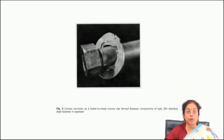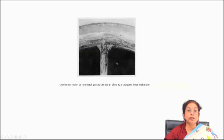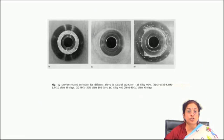You have to design component combinations properly to combat the possibility of crevice attack. This is an example of crevice corrosion at a metal-to-metal crevice site between components of type 304 stainless steel fasteners in seawater — there is a lot of crevice corrosion at the fastener. Another example is crevice corrosion at a non-metallic gasket site on an alloy 825 seawater heat exchanger. In the gasket region, crevice corrosion creates a lot of trouble and damages the surface to a large extent.